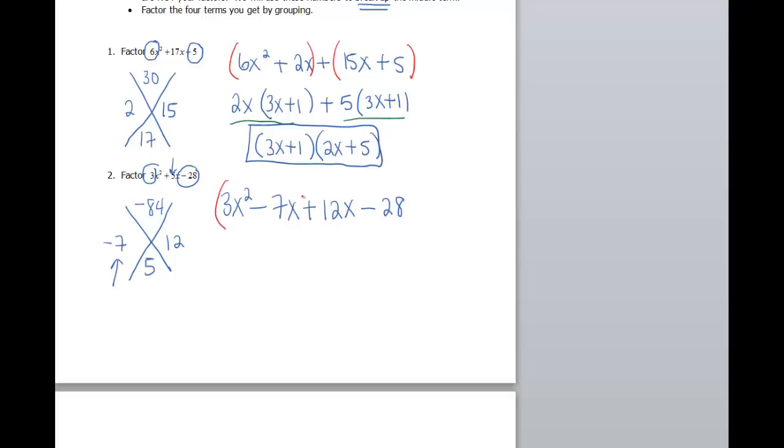Now I can factor by grouping. Group the first two together, group the last two together. What can I factor out of the first two? That's just an x. That leaves me with 3x minus 7. Looking at the second two, I can factor a 4 out. That leaves me with a 3x minus 7.